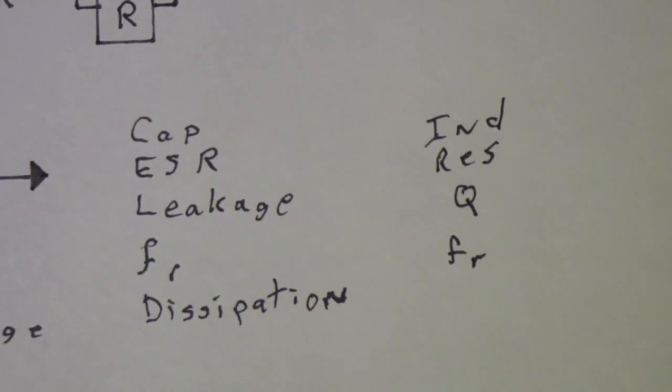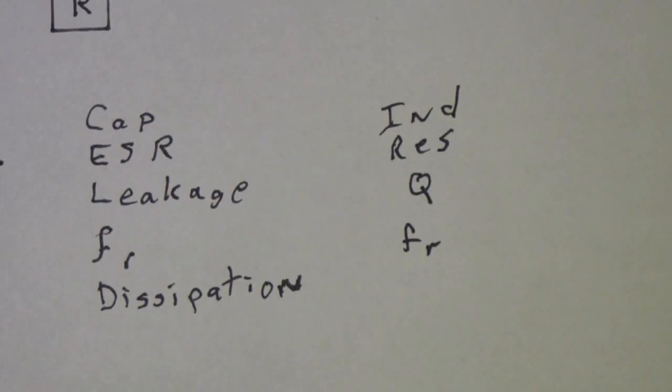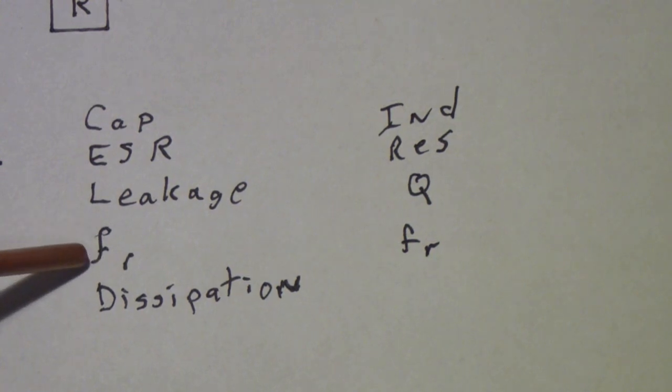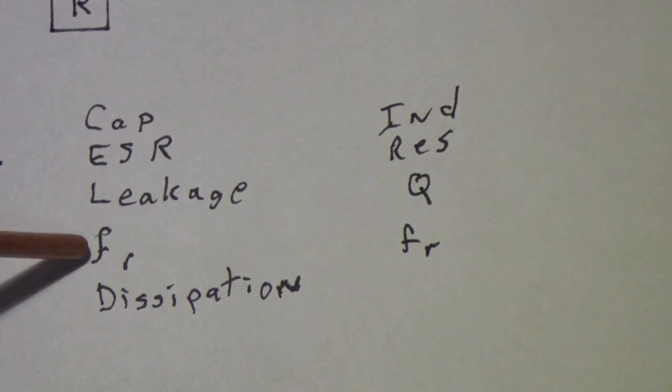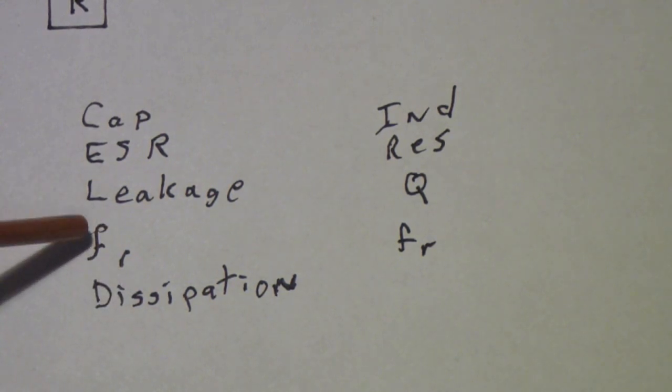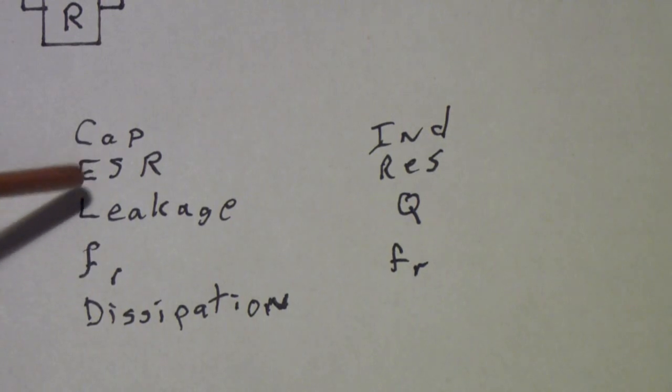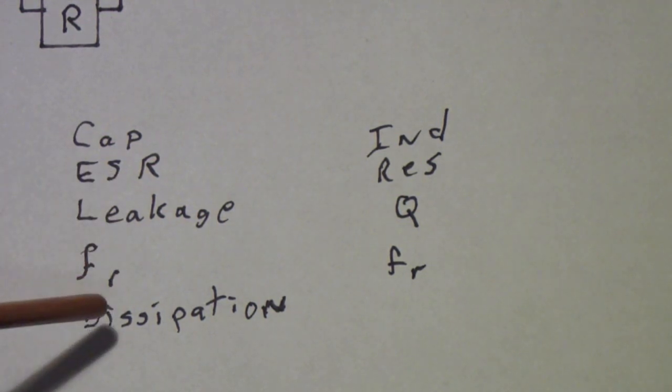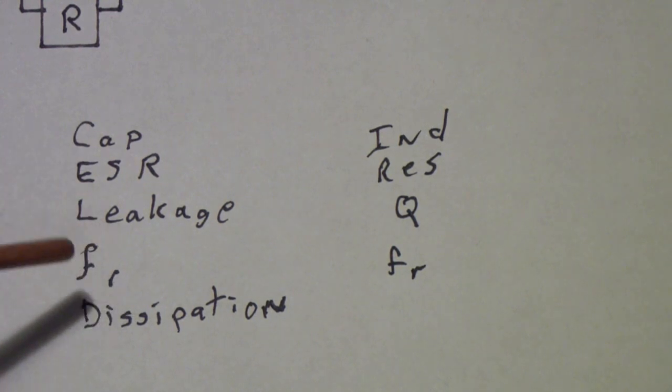Here are the things we might want to measure. In a capacitor, we might want to measure the capacitance, the ESR, the leakage, a factor I haven't talked about, the self-resonant frequency, and the dissipation. And a modern meter will read most of these. But as we will see, neither the self-resonant frequency nor the leakage under high voltage are tested by modern ESR or LCR testers. So, someday we will look at how you check those.